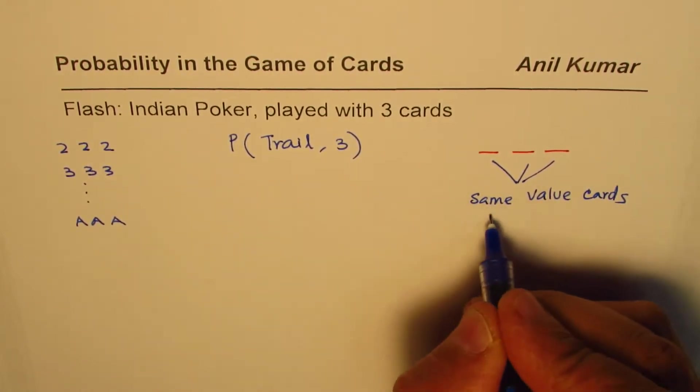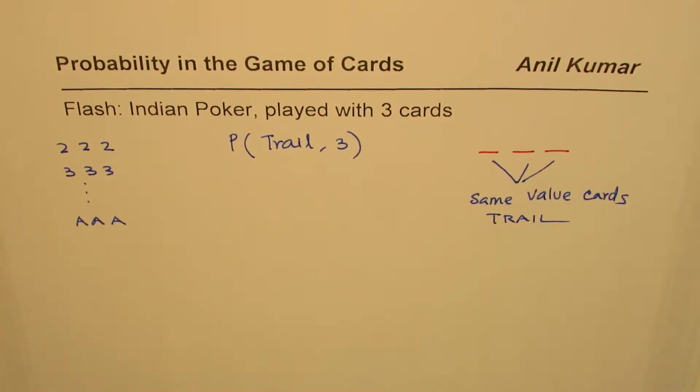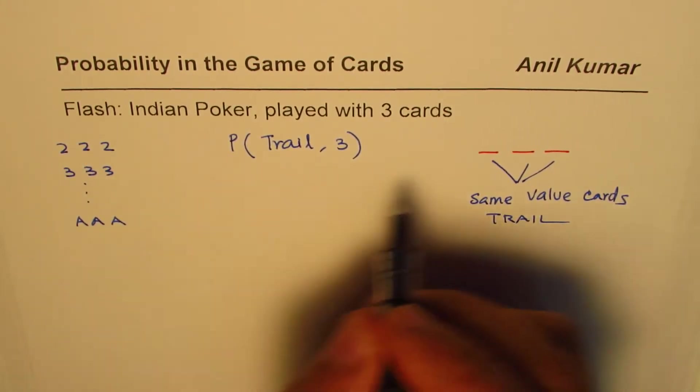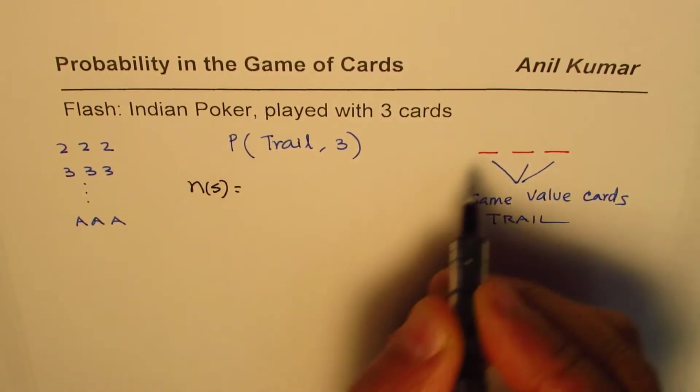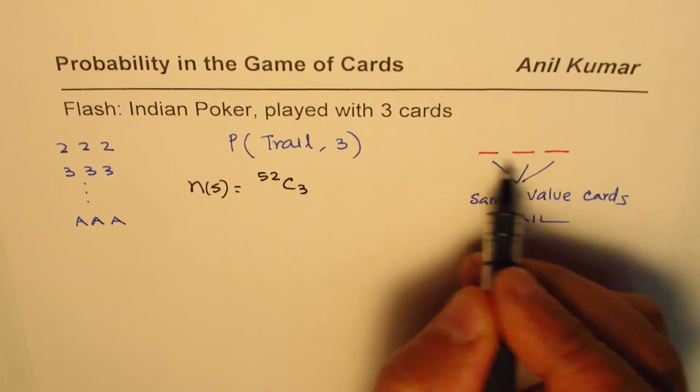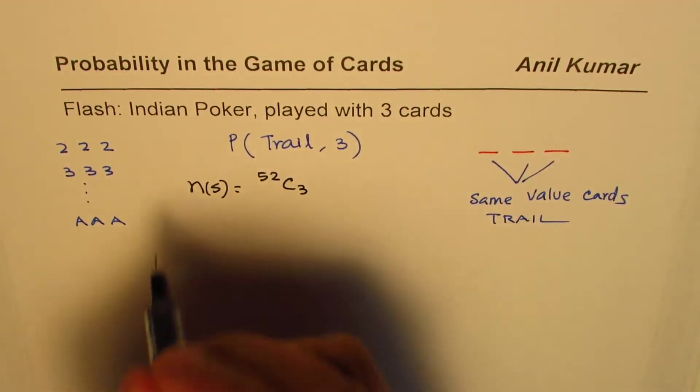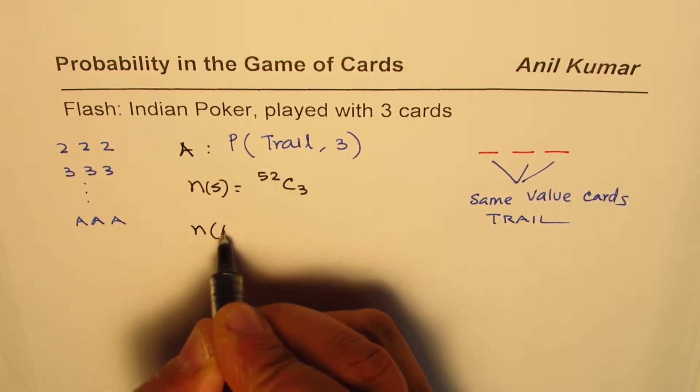We need to find probability of getting a trail. Let's calculate this probability. Since there are 52 cards, the total number of options we have is 52C3. We are selecting three out of 52. Let's call this event A, the probability of getting trail.